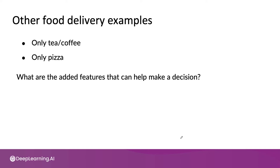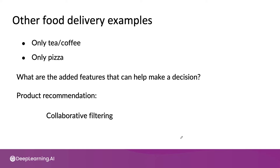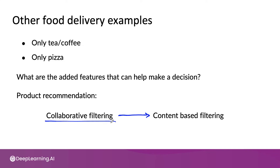Over the last several years, there's been a trend in product recommendations of a shift from collaborative filtering approaches to content-based filtering approaches. Collaborative filtering loosely looks at the user, tries to figure out who's similar to that user, and then recommends things that people like you also liked. In contrast, a content-based filtering approach will tend to look at you as a person and look at the description of the restaurant, the menu, and other information about the restaurant.